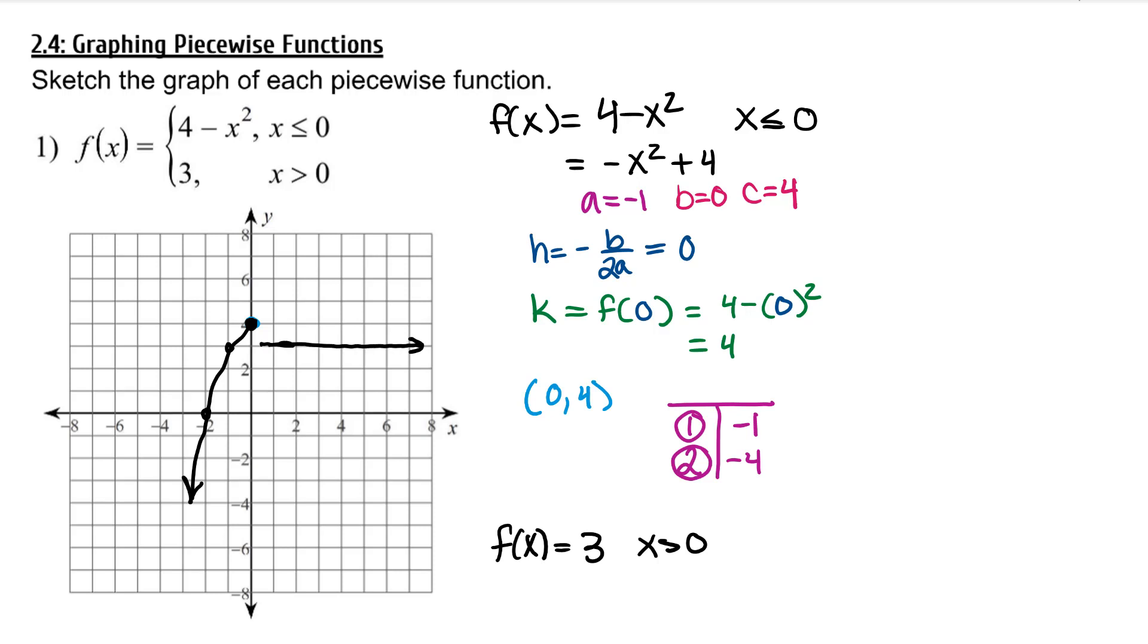In order for this piecewise function to truly be a function, we can't have two y values for the same x value. So at x equals 0, the parabola point is defined. The horizontal line point is not defined. So I'll put a hole at 0, 3 to show that everything approaching 3 from the right is allowed. But at the actual x value of 0, 3 is not the y value. The y value is 4.